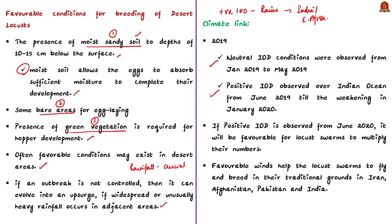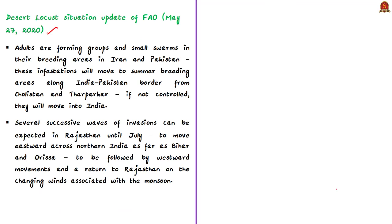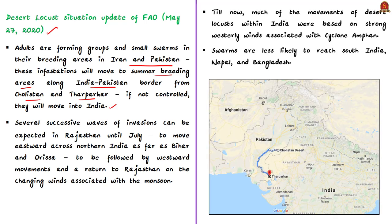Favorable winds will also help locust swarms fly and breed in their traditional grounds in countries such as Iran, Afghanistan, Pakistan, and India. FAO issues desert locust situation updates. As per the recent update, adults are forming groups and small swarms in their breeding areas in Iran and Pakistan. These infestations will move to their summer breeding areas along the India-Pakistan border from Cholistan and Tharparkar. Within India, movements of desert locusts were based on strong westerly winds associated with Cyclone Amphan, showing that regional atmospheric weather systems also play a very important role.